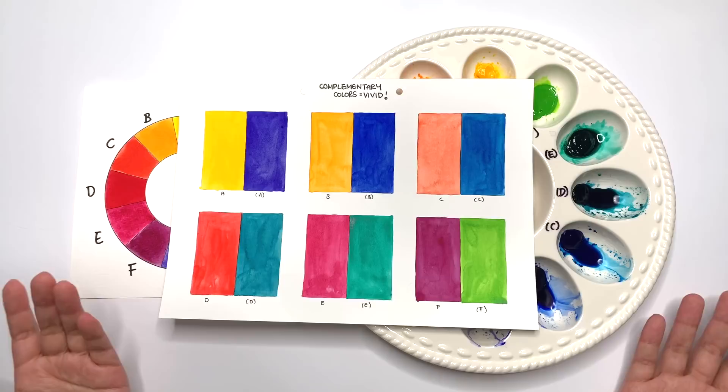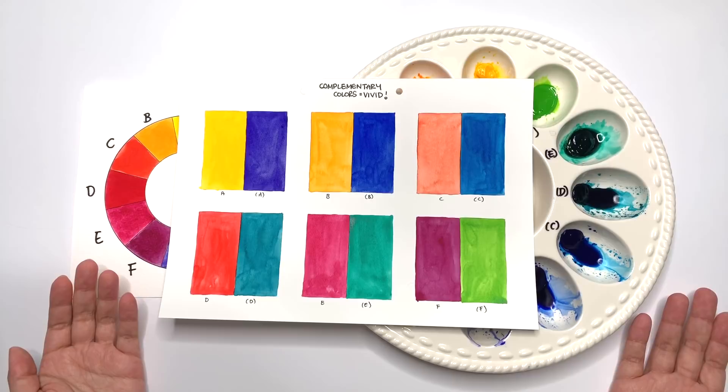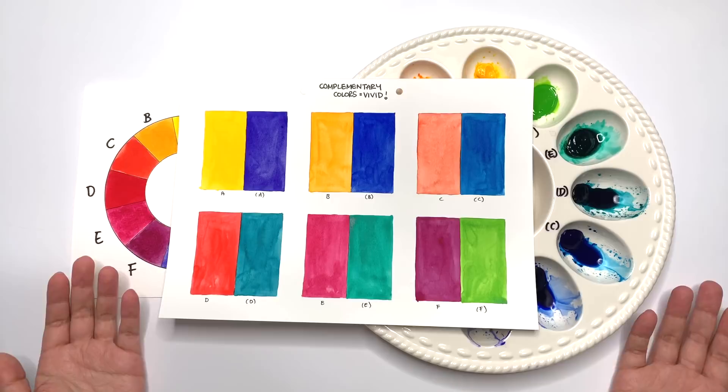However, complementary colors are incredibly useful in color mixing as well because the magic of complementary colors is that they are most vibrant when they are next to each other, but also when you mix them, they become the most muted colors you can get on the palette. Let me show you what I mean.